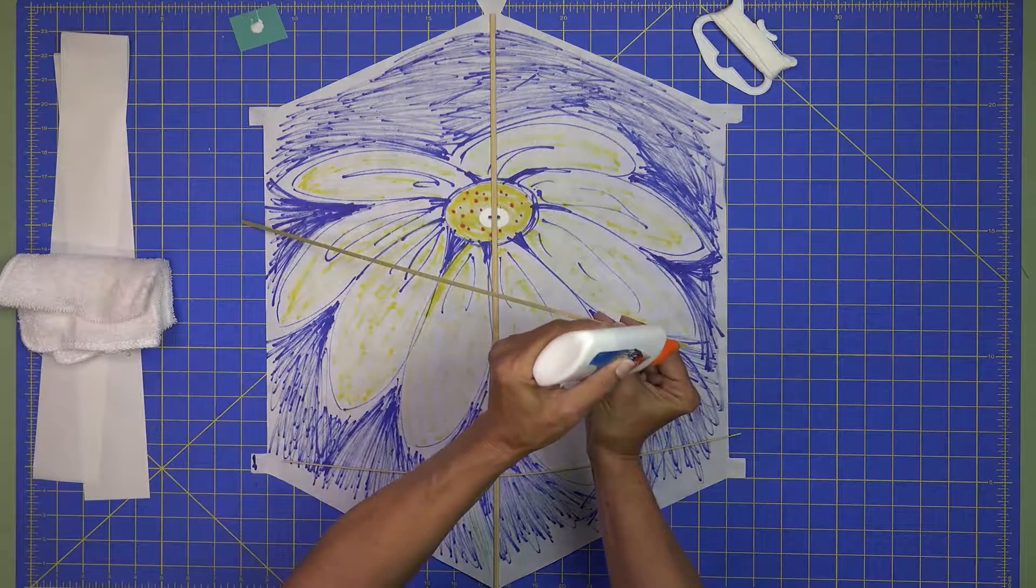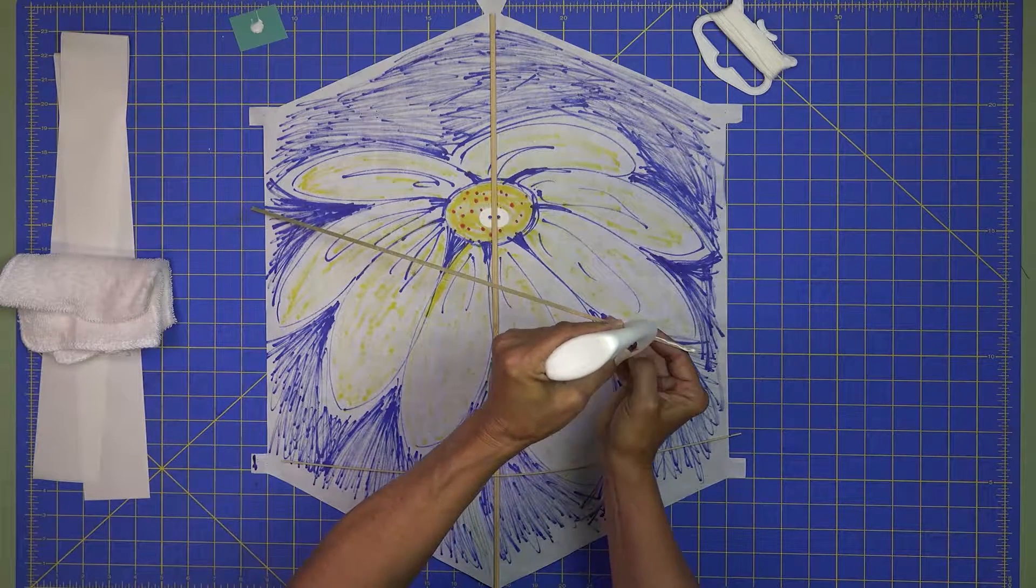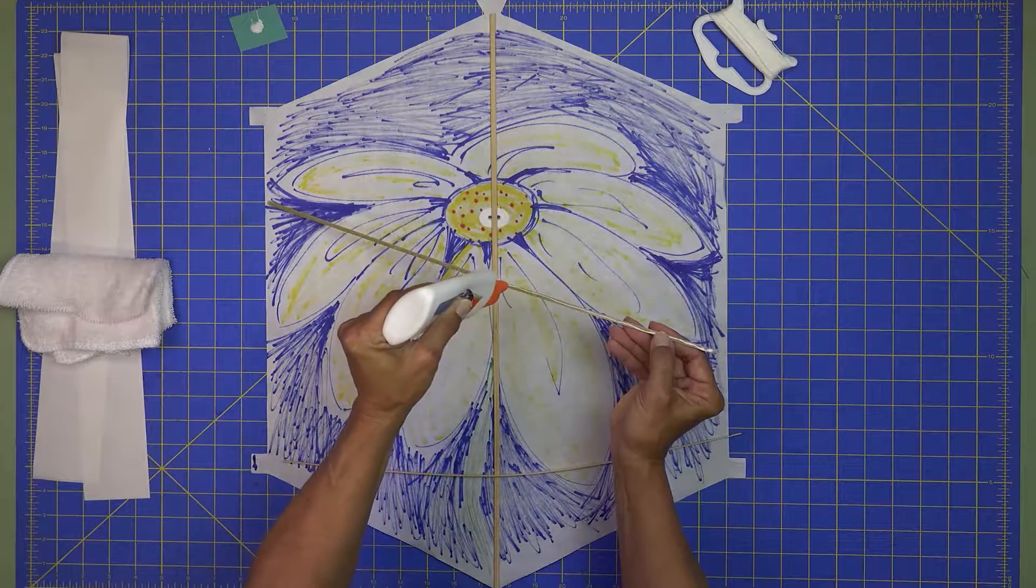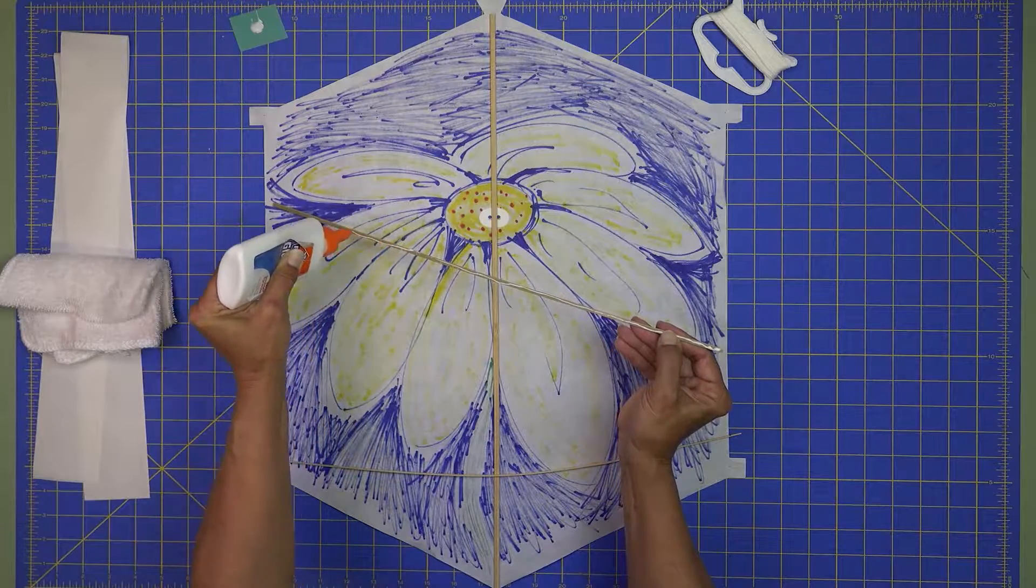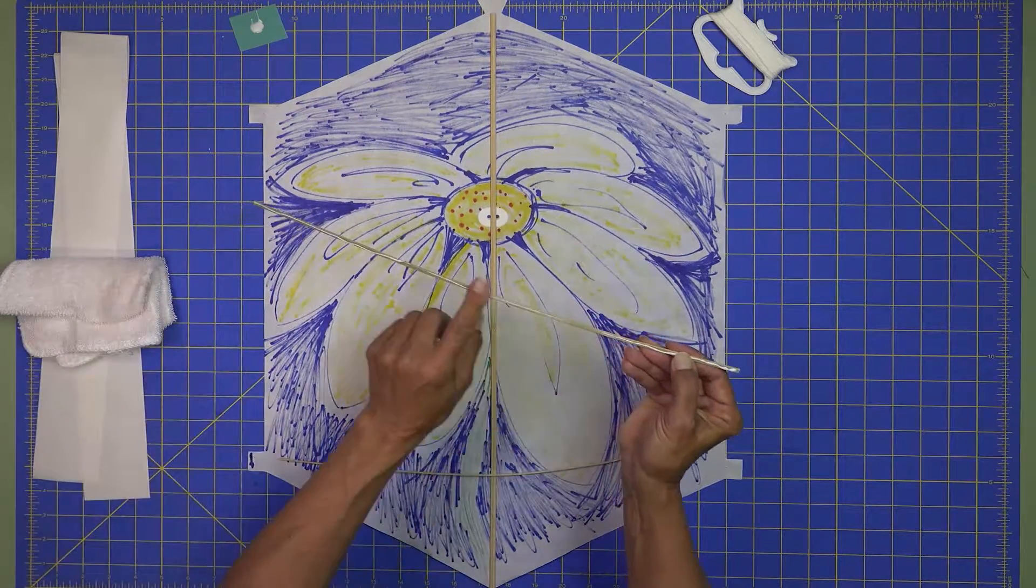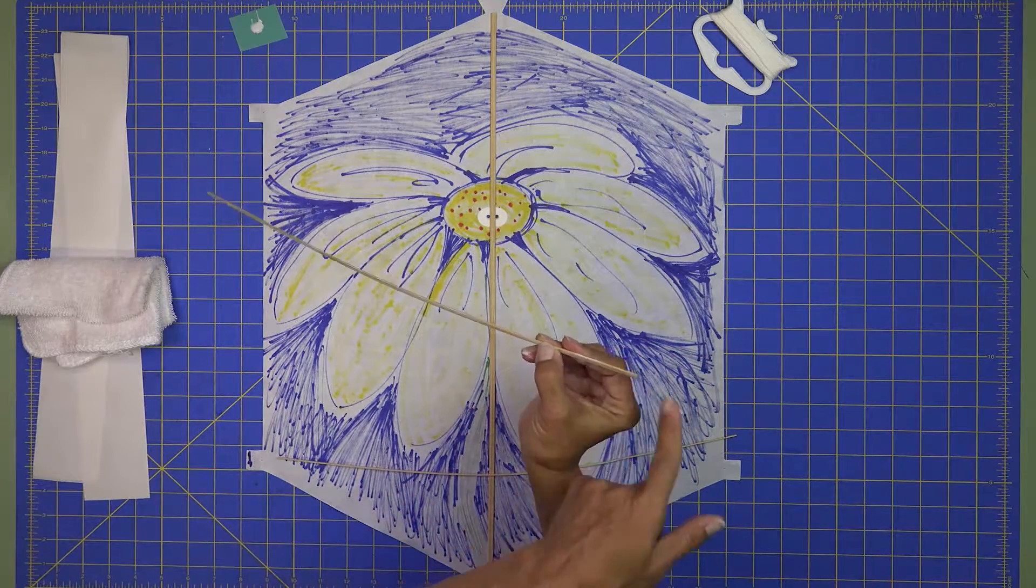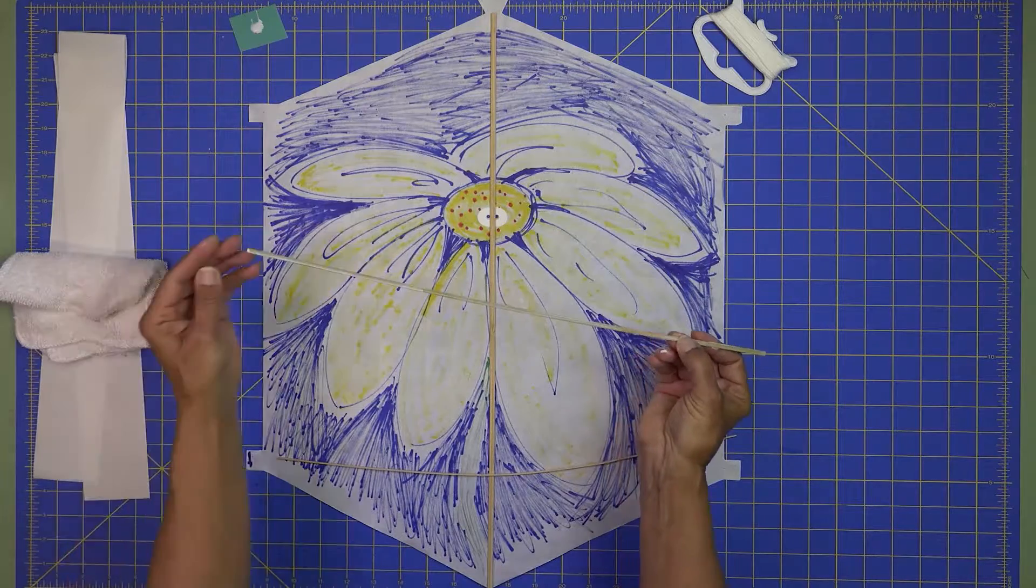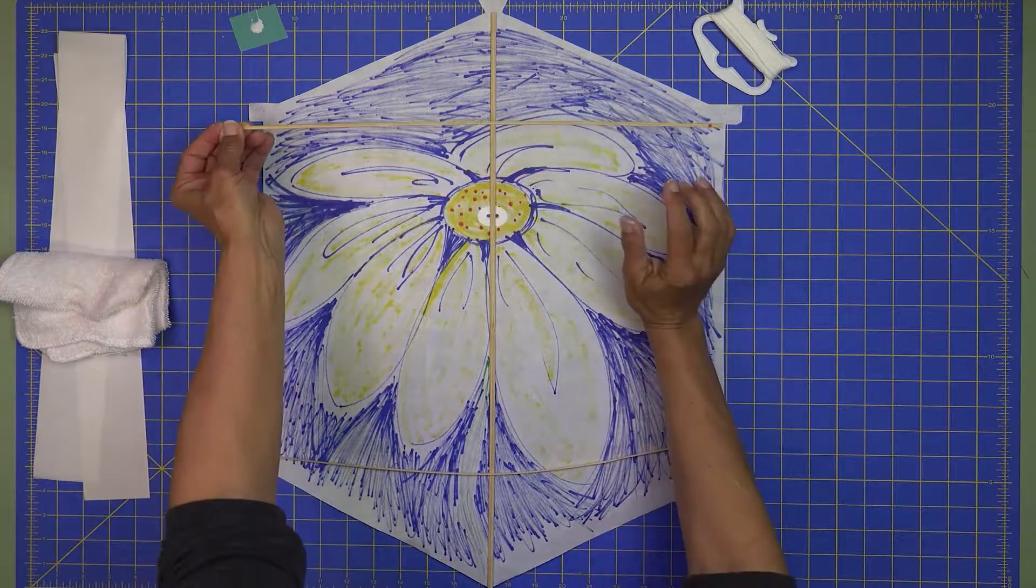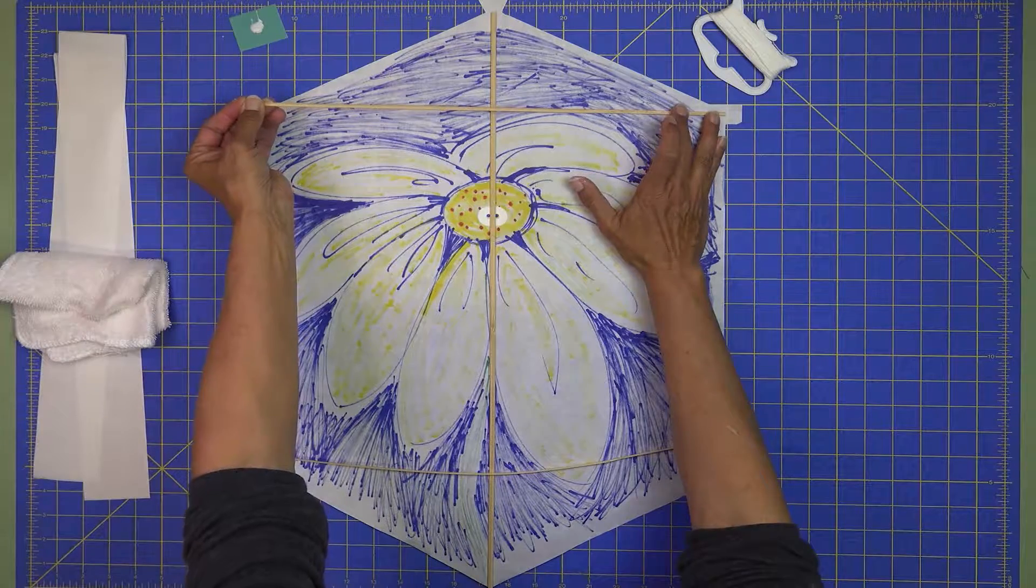So we'll just take a little bit of glue, run it right down the stick, and then we're going to smooth that out with our finger. Clean our fingers up a little bit, and then you'll start on the right side, or the left, but I start on the right.